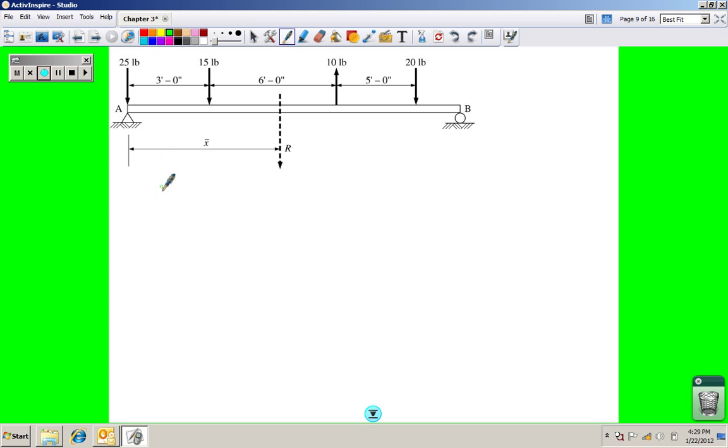Alright, let's try and work this example. So we're going to say X-bar is equal to the sum of the moments around A, divided by the resultant R. So as I plug that in, that is a 25 pound force times, what's the distance there? It's zero. So that one's not going to contribute. And then we have 15 pounds times 3 feet.